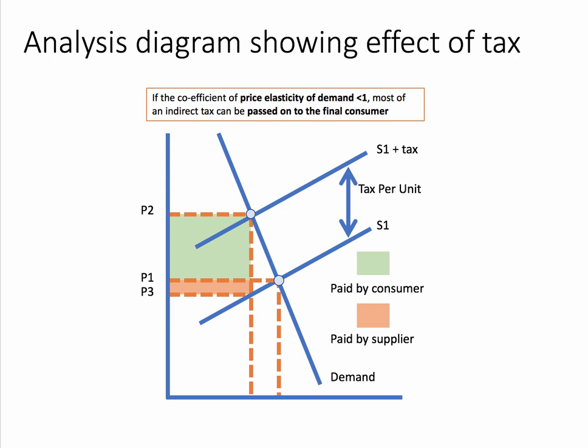If you wanted to use a diagram here, this would be fine — it shows a tax on the product. Try to contextualize the analysis; label the axes as, say, the amount of plastic consumed and the price of a plastic bottle. It's best to label the diagram clearly. If you wanted to show the effect on the cost of a business, you could also use cost curve diagrams — it's up to you.